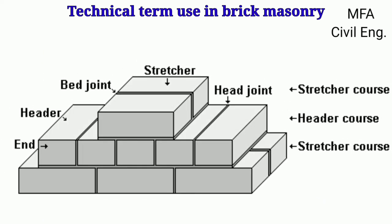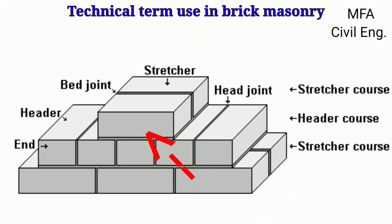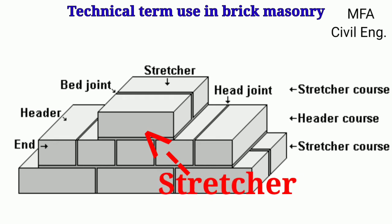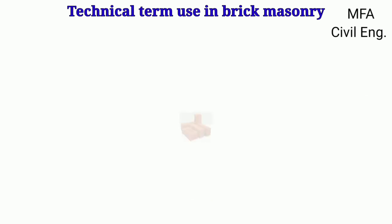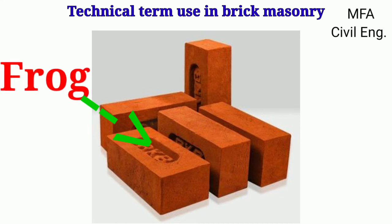The brick which lies with its longest length at right angles to the face of the masonry work is called the header, and the brick which lies with its longest side parallel to the face of the masonry work is called the stretcher. The indentation placed on the top face of a brick so as to form a key for holding the mortar is called the frog.